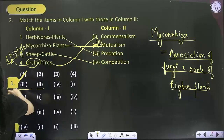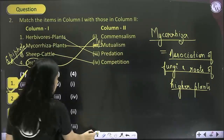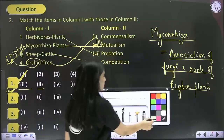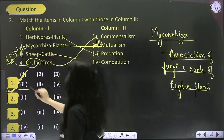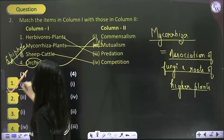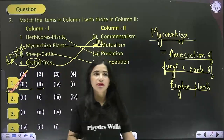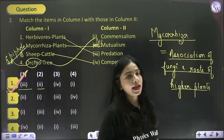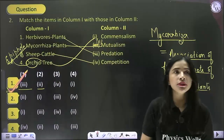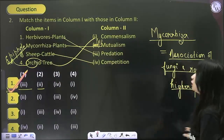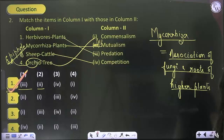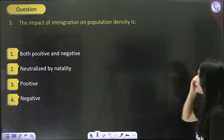The matching is: one with three, two with two (note: this is a printing mistake in the question), three with four, and four with one. So the answer of this question becomes option 1.